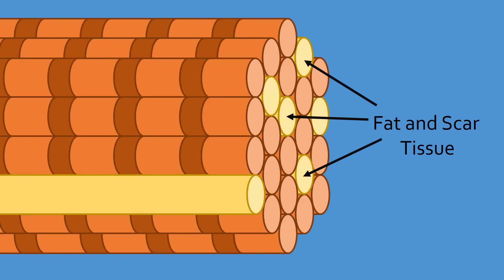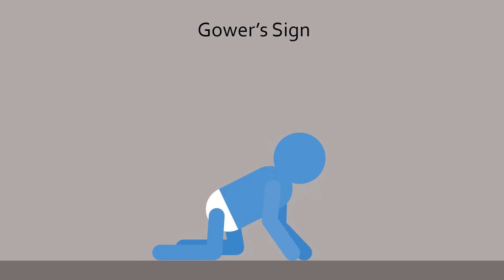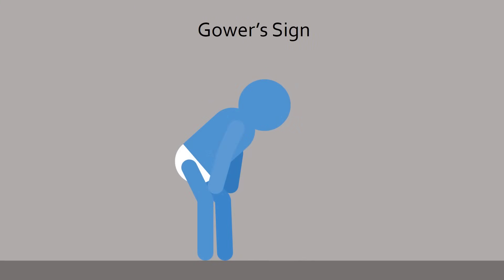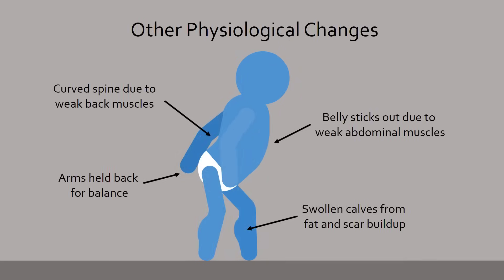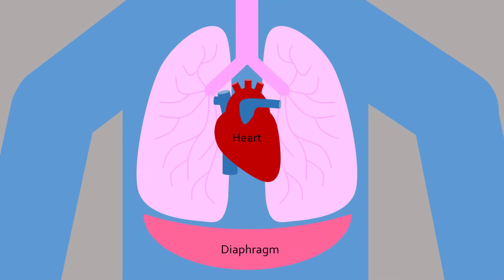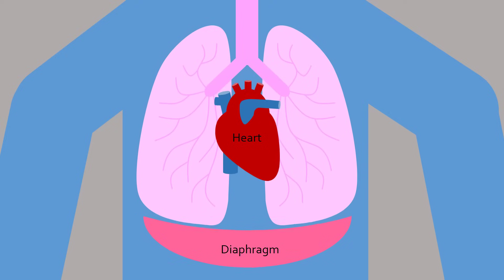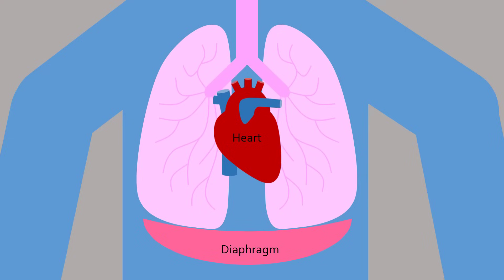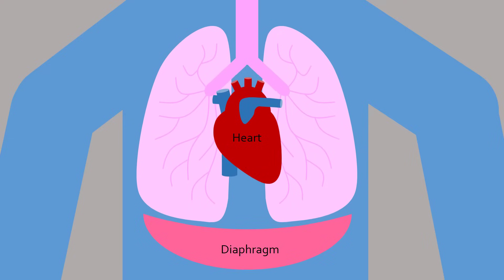This weakening leads to a distinct pattern of symptoms, such as Gower's sign, where a child must use his or her arms to stand up because the leg muscles are too weak. Other physical symptoms include a curved posture to account for weaker chest and leg muscles, and calves that are swollen due to buildup of fat and scar tissue. Since the heart and diaphragm are also muscles, they gradually weaken over time as well, eventually stopping and leading to death often before age 30.